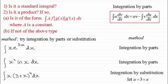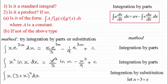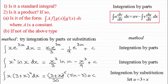OK, welcome back then, if you had a go. The answer to the first one is x·e^(3x) all over 3 minus 1/9·e^(3x) plus a constant of integration. And the second one is x³/3 times the natural log of x minus x³/9 plus c. And in the last one, the answer is (3+x)^5 over 30 multiplied by (5x − 3) plus the constant of integration c.